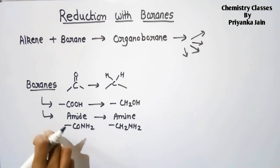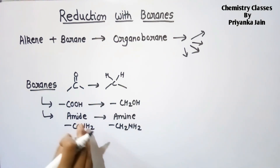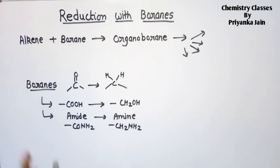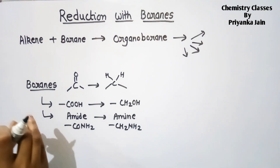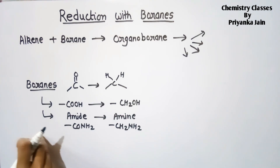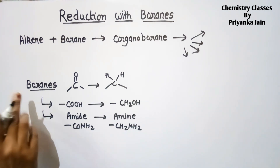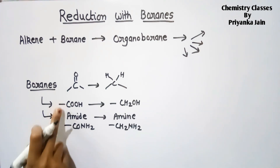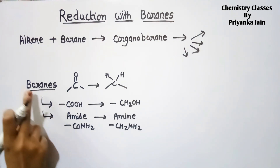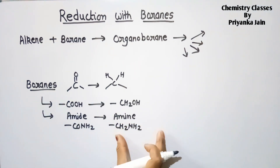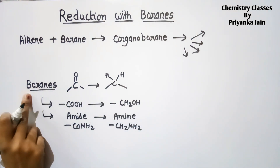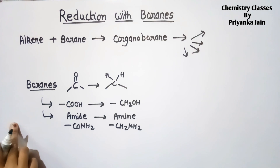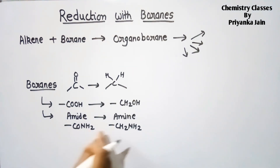The speciality of these reactions is their chemoselectivity. If any other functional group is present — like a keto group, an ester group, or an acyl chloride group — these groups will not be attacked by boranes. They remain as they are. Only the carboxylic acid and amide groups are attacked and reduced. This is the chemoselectivity of boranes.